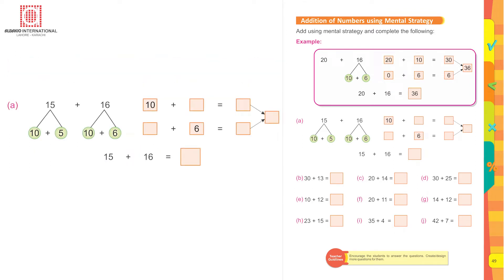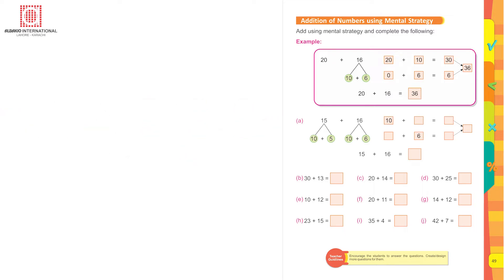Similarly, 15 plus 16. First you split them into tens and ones. Add all the ones: six and five is eleven. This makes one ten and one, so there are three tens and one one. The answer is 31. Do the remaining problems yourself in the same way I have explained.